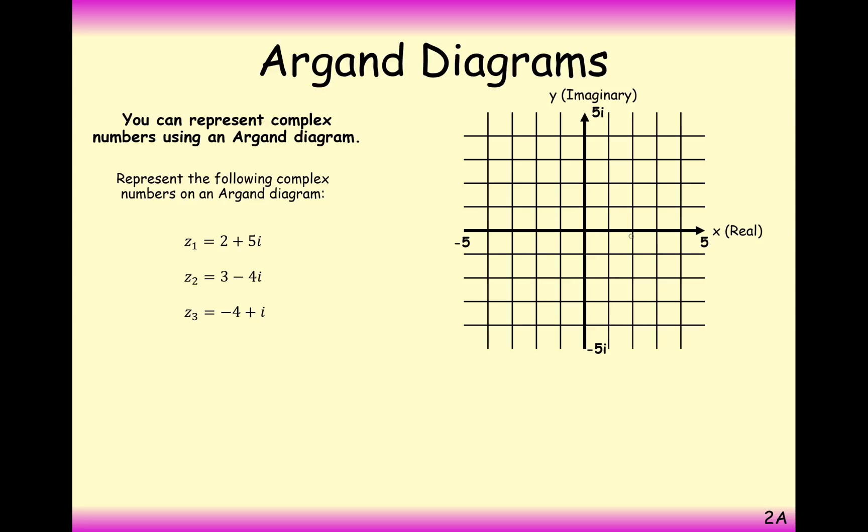So 2 plus 5i, you'll go 2 to the right and 5 up. Effectively it's the same as the coordinate 2, 5. You can think of it like that as well. You plot your point here, put a little cross on the lines and call it z1. For 3 minus 4i, you go 3 to the right and 4 down this time, because it's a minus 4. You could think of this as 3, minus 4 as a coordinate.